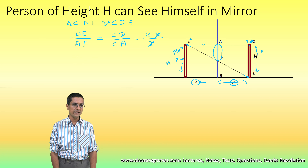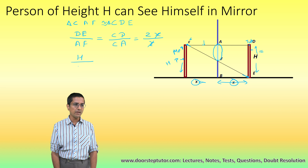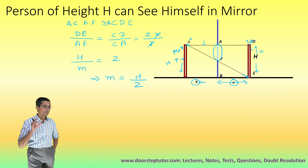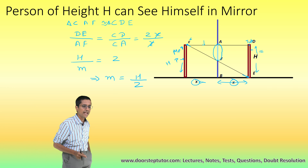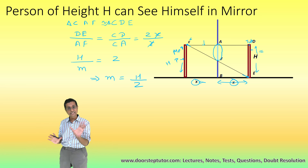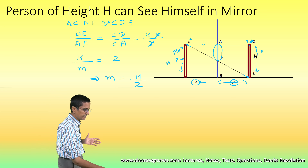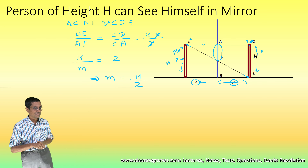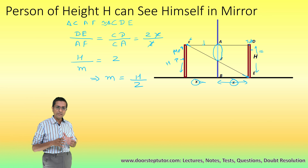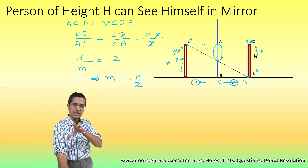The x and x cancel out. Since the height of the person DE is h, we get h divided by AF (the mirror height m) equals 2, which implies m equals h/2. The mirror must be at least half the height of the person for them to see themselves completely, and this holds no matter what distance x they are standing from the mirror. This problem uses properties of plane mirrors and the concept of similar triangles.